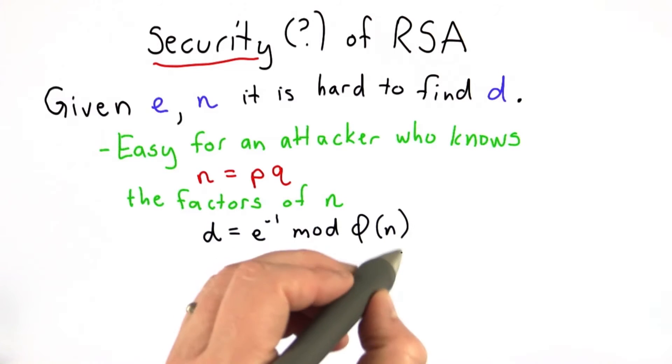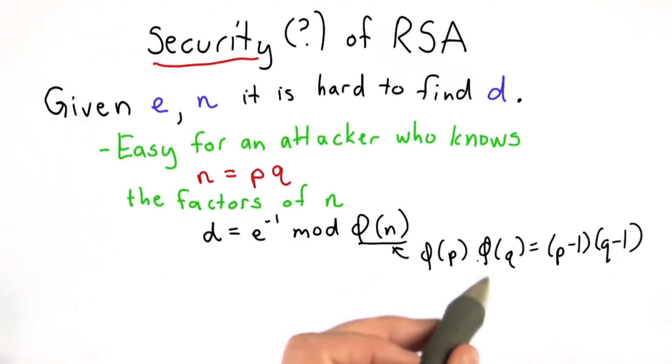And if you know the factors of n, you know the totient, because that would be the totient of p times the totient of q, which are both primes so easily solved. So our security argument relies on two things.